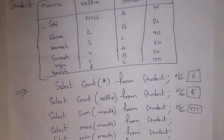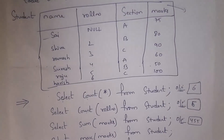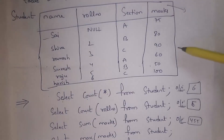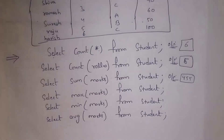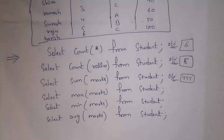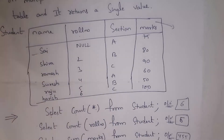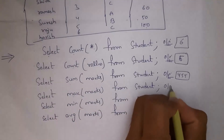Next I will explain the MAX function. MAX function is used to identify the maximum number in a particular column, and MIN function is used to identify the minimum number. To find the maximum value in the marks column I write: SELECT MAX(marks) FROM student. The maximum value is 100, so the output will be 100.